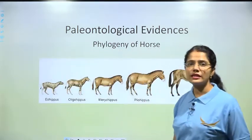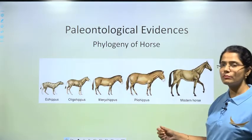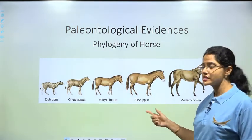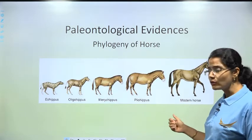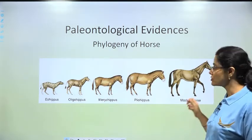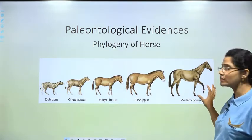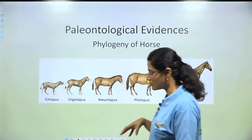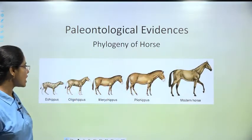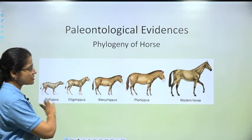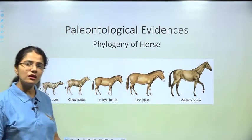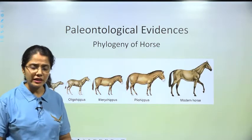The names you are seeing here are Eohippus, Oligohippus, Merihippus, Pleohippus, and the modern horse. The modern horse is the present-day form, and all the others are the ancestral forms which existed in earlier times.